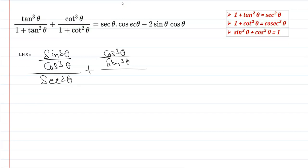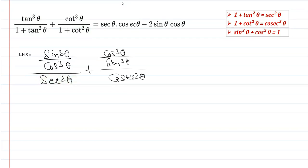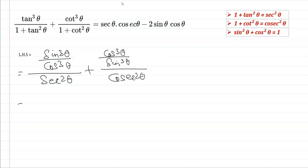And 1 + cot²θ is cosec²θ, so we can directly substitute it. Alternatively, you can convert these into sin and cos and get the same result. Now we can write sec²θ as 1/cos²θ and cosec²θ as 1/sin²θ.